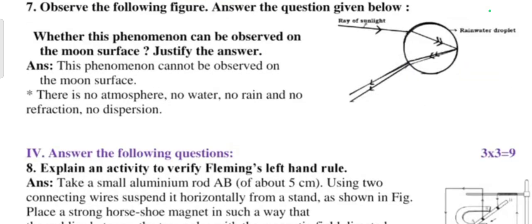Question number seven: observe the following figure, answer the given question. Whether this phenomena can be observed on the moon surface? Justify the answer. This phenomena cannot be observed on the moon surface. There is no atmosphere, no water, no rain, and no refraction, no dispersion.